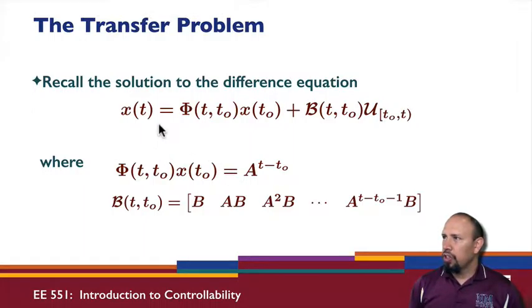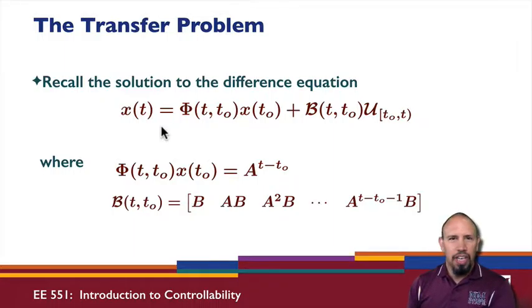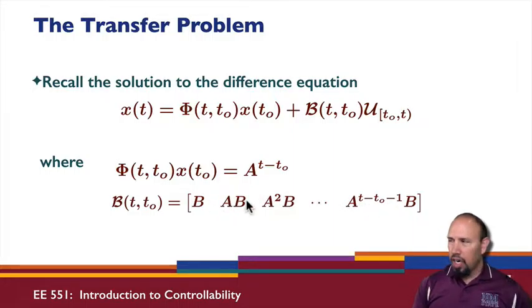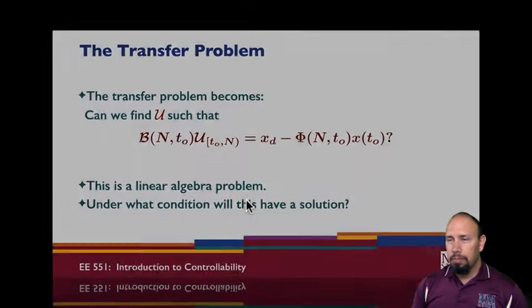So here's the solution to our difference equation. Notice it looks very similar to our solution for our differential equation because of the fact that we use the state transition matrix and the control map. Remember that the state transition matrix for a discrete time system is A to the power something, and the control map is actually this telescoping matrix that's like this. So this is our solution to our state transition problem.